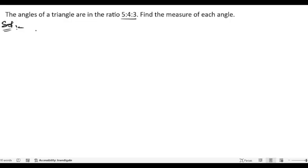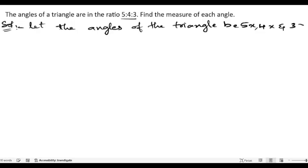If they are giving us the ratio, then we will take the angles as variables. Let the angles of the triangle be 5x, 4x, and 3x. So these are the angles.